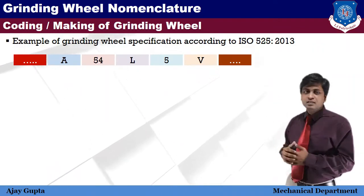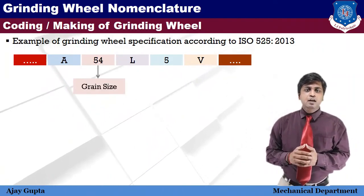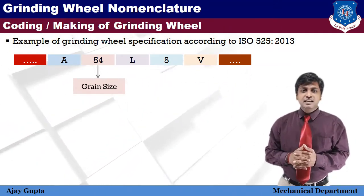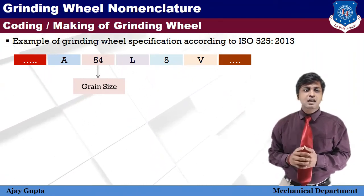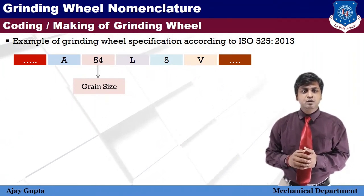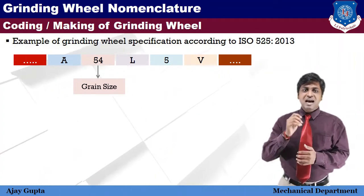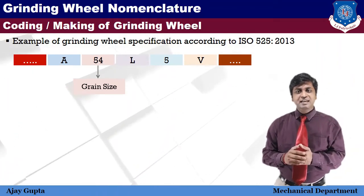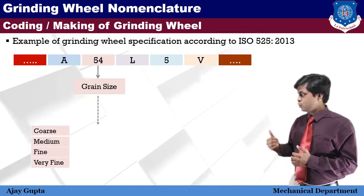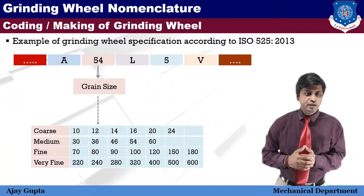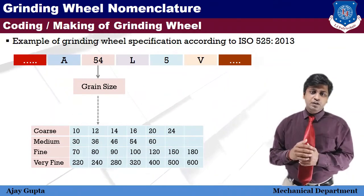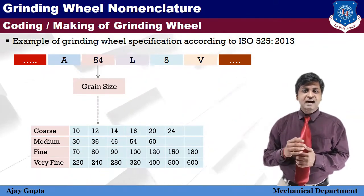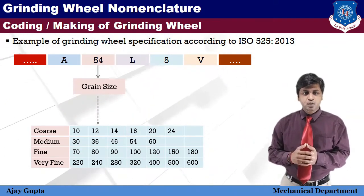The third symbol is grain size. This number gives an idea of the size of the abrasive grains, also called grit. The number is decided based on the number of holes per inch length of the sieve used to filter the abrasive particles — larger numbers indicate finer grain size. Abrasive particles are categorized into four categories: coarse, medium, fine, and very fine. Grain size depends upon the quality of material to be ground, required surface finish quality, and hardness of the workpiece material.